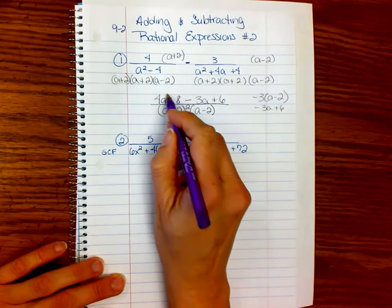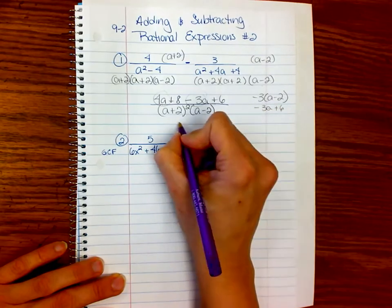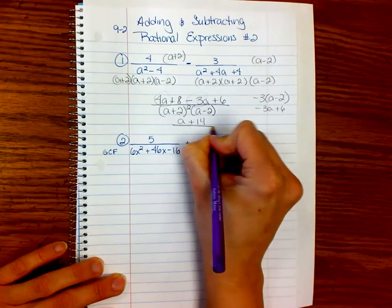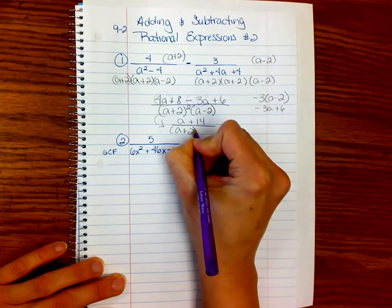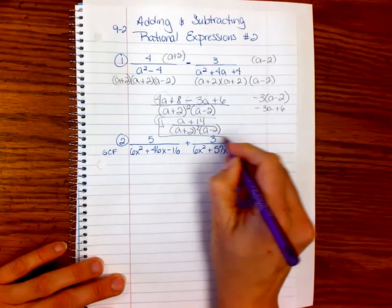Okay, so what's in common? Well, these are in common. So 4a minus 3a is just a. And 8 plus 6 is 14. So it's a plus 14 over all this. a plus 2 squared times a minus 2. So this is our answer.